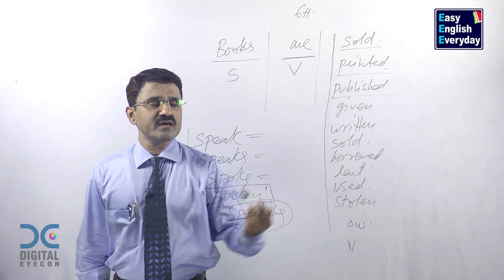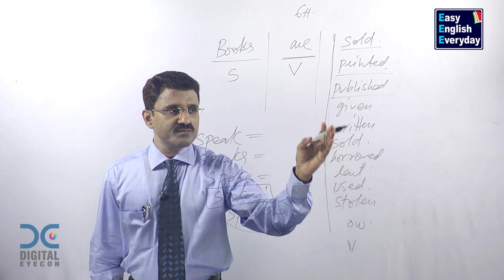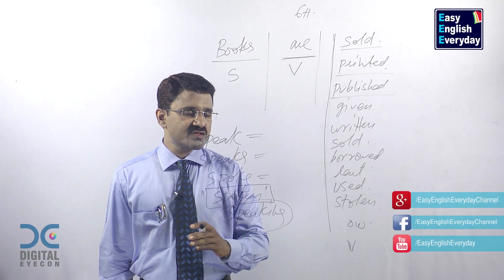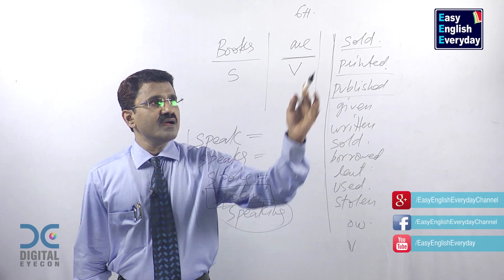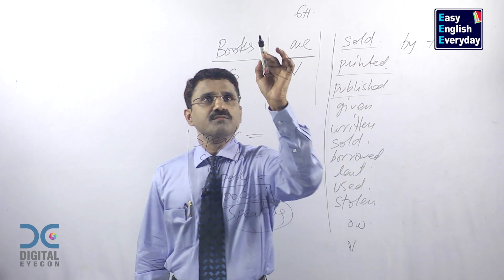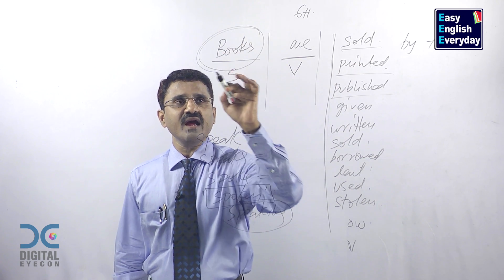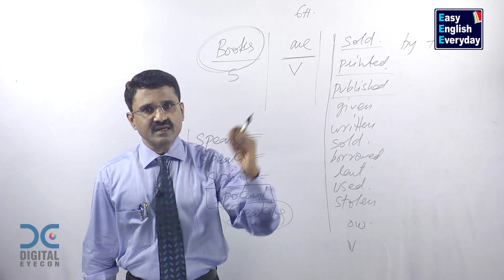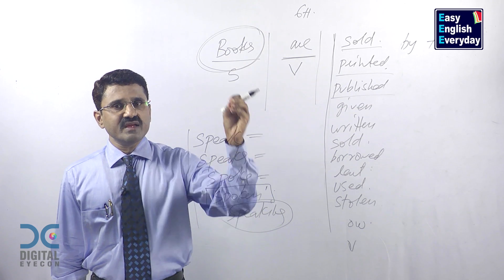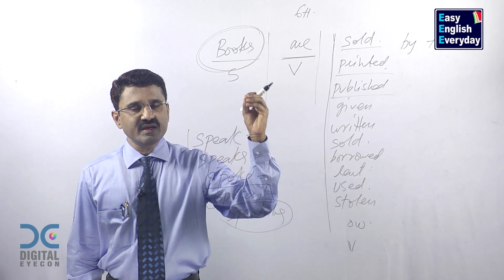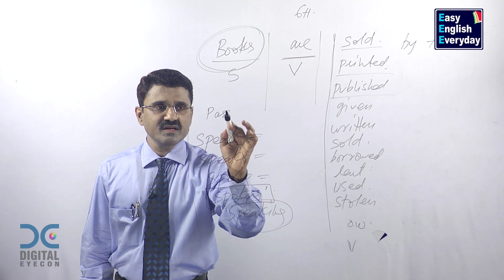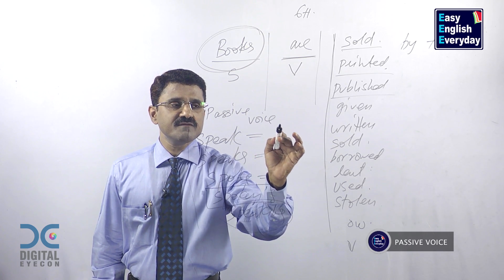Books are sold, books are printed, books are published, books are given, books are written, books are borrowed, books are lent, books are used, books are stolen. These are the actions done by somebody else. Books are not doing any action here. Something is done to the books. Books are not at all the doers — books are receivers. In English grammar, this is called passive voice.